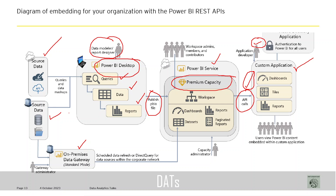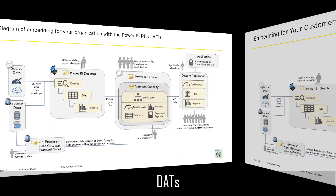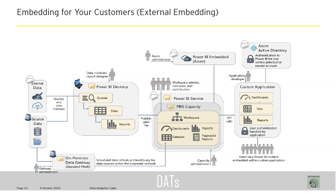The next architecture diagram shows how embedding works for external users. This diagram looks almost similar to the one we just saw, but there are a few components added — especially Power BI Embedded. Power BI REST API can be used for embedding Power BI content into custom applications used externally by customers and partners. These customers and partners are not part of the organization and should be able to see the content exposed in the application without having Power BI licenses.